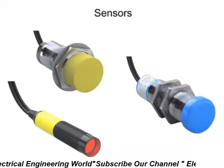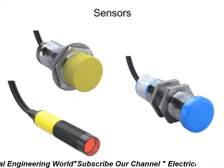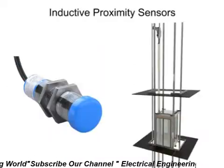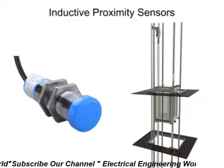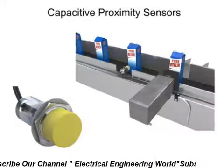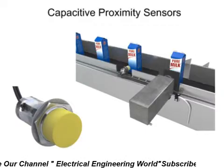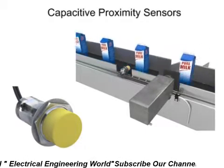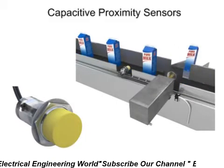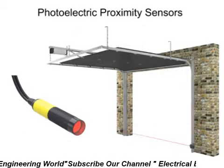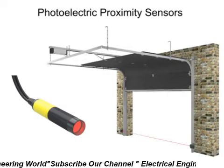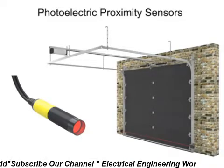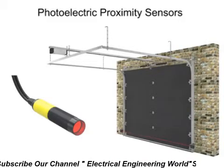Sensors of various types help us in everything we do and consume. Inductive proximity sensors are used in elevators, for example. Capacitive proximity sensors are used to detect liquids and other dielectric materials on the manufacturing floor. And photoelectric sensors are used in our homes and in countless other applications. Let's take a closer look at how these three common types of sensors work.